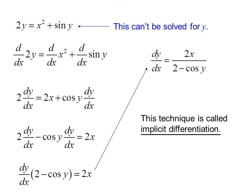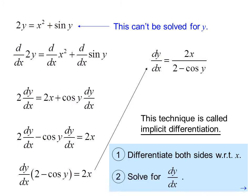This technique is called implicit differentiation. The steps are one, differentiate both sides with respect to x, and two, solve for dy/dx. It's called implicit differentiation because we can't solve for y and then take the derivative.